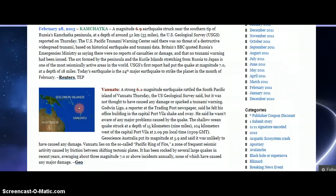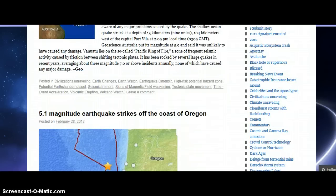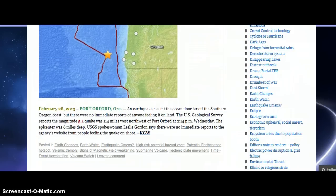The shallow ocean quake struck at a depth of 15 kilometers, 9 miles, 104 kilometers west of the capital Port Vila at 2:09 p.m. local time. A 5.1 magnitude earthquake strikes off the coast of Oregon.